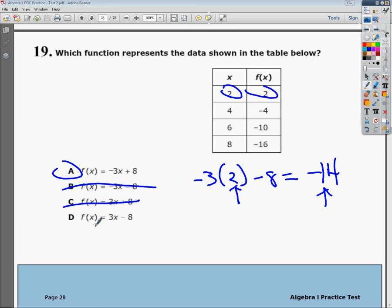For D, if I plug in 2, it would be 3 times 2 is 6, minus 8 gives me negative 2. It's not the same as positive 2. And if you went into 4, you'd get 3 times 4 gives you 12, minus 8 gives you positive 4.